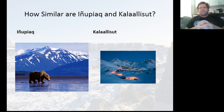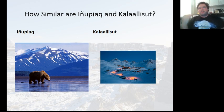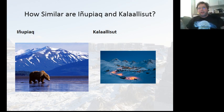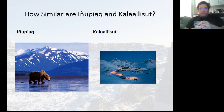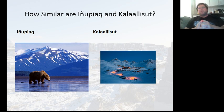Chances are you clicked on this video but might not know exactly what Inupiaq and Kalaallisut actually are. These are both Eskimo-Aleut languages, in particular Inuit languages, spoken within northern Alaska, northern Canada, and Greenland. The Aleutian languages, more distant relatives of the Inuit languages, are spoken primarily in central Alaska as well as Siberia. Inupiaq and Kalaallisut are actually family members, and exactly how close will be determined by the scope of this video.